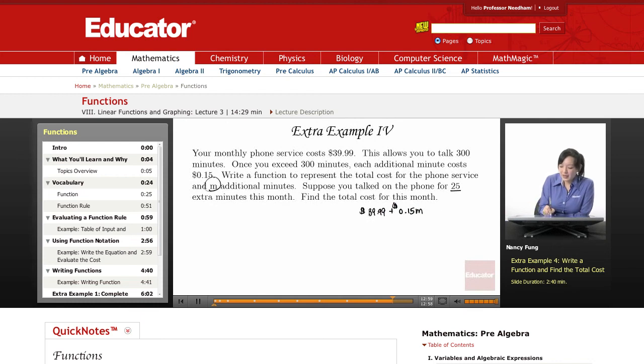We don't know the number of minutes, and they ask us to use m to represent the minutes. Here's the $39.99 flat rate for every month for the 300 minutes, and here's your cost for your extra minutes, assuming you always go over and need extra minutes.